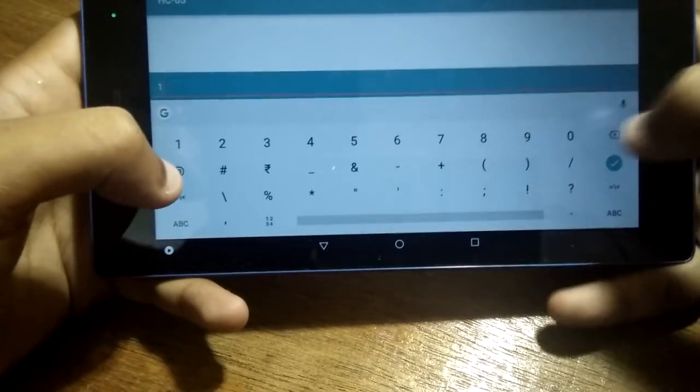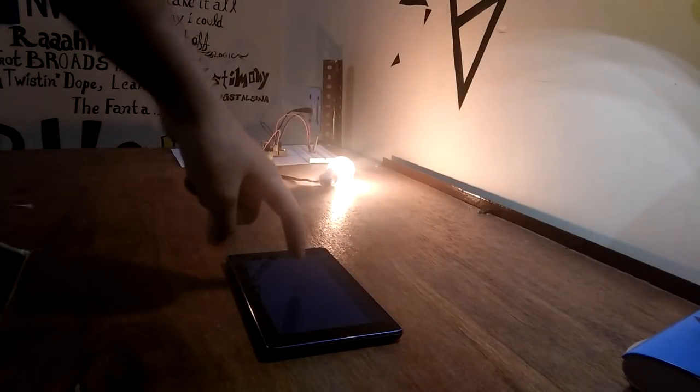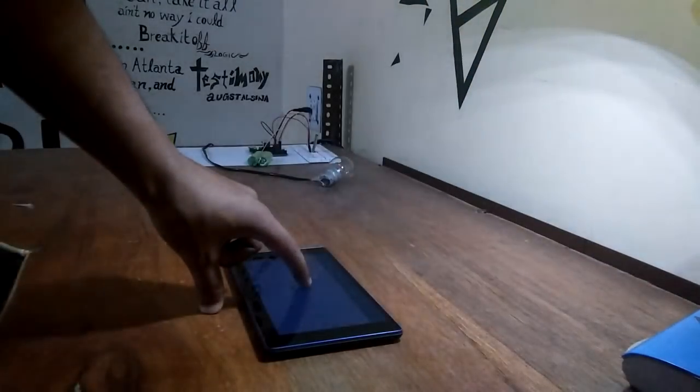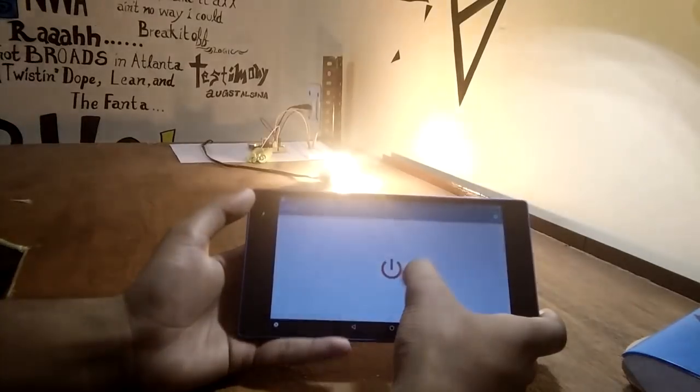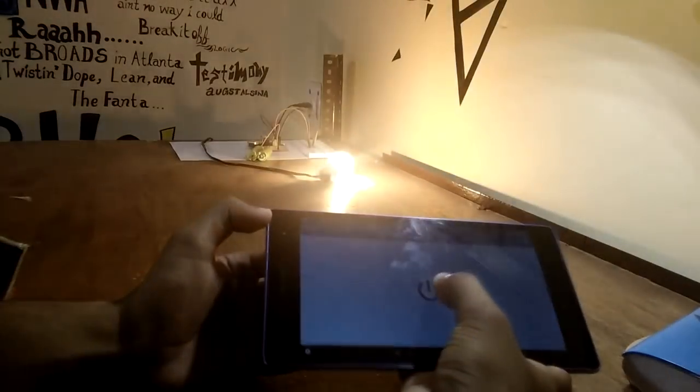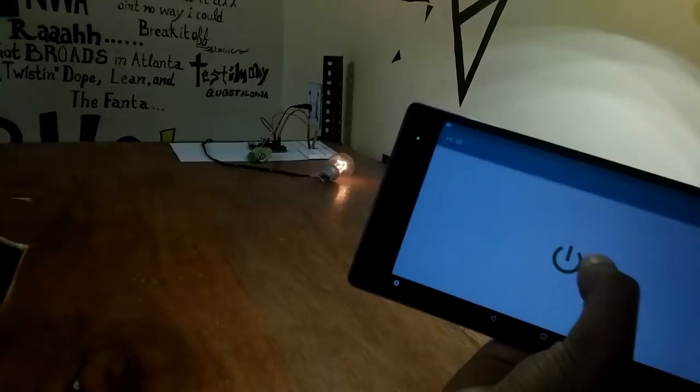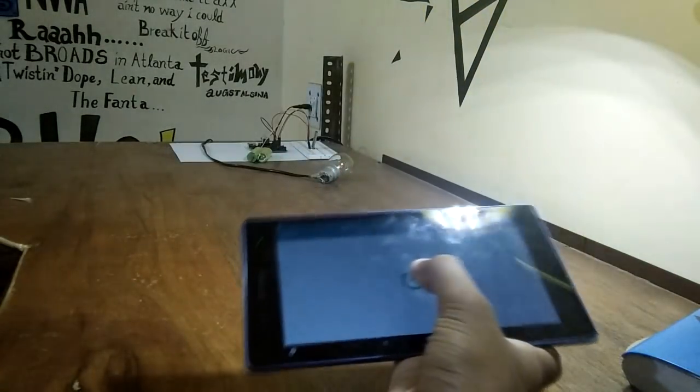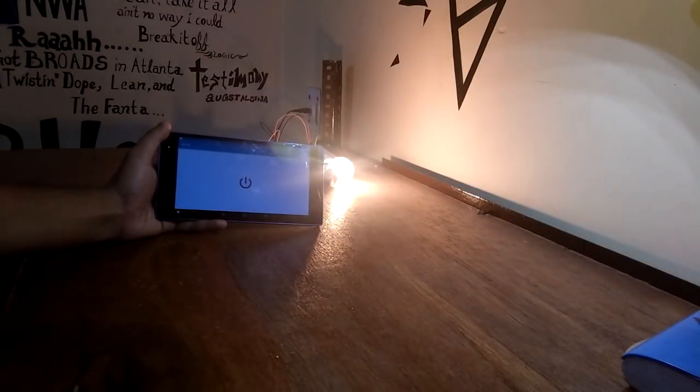After this just start sending the values assigned and the AC bulb will start turning on or off depending on your command. Right now I'm using that button feature of app to toggle our relay, but you can use Bluetooth terminal or any other similar app to connect HC-05 with your smartphone.